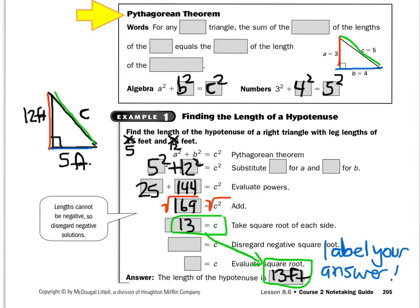Look here, the Pythagorean Theorem. In algebra, A squared plus B squared equals C squared. For numbers, look at this right triangle, 3 squared plus 4 squared has to equal 5 squared. So A squared plus B squared equals C squared.